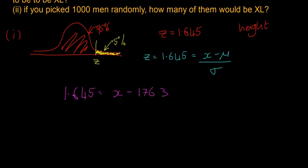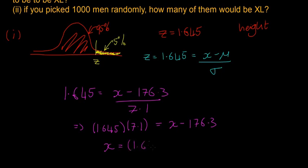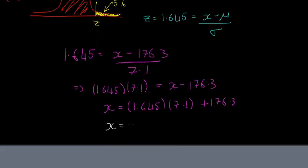So we can continue our equation. So it's going to be 1.645 is going to be equal to X minus 176.3 divided by 7.1. So that means that 1.645 multiplied by 7.1 is going to be equal to X minus 176.3. So then the last line is just going to be that X is going to be equal to 1.645 multiplied by 7.1 plus 176.3. So I just moved this 176.3 over to the other side of the equation and changed it to a plus.